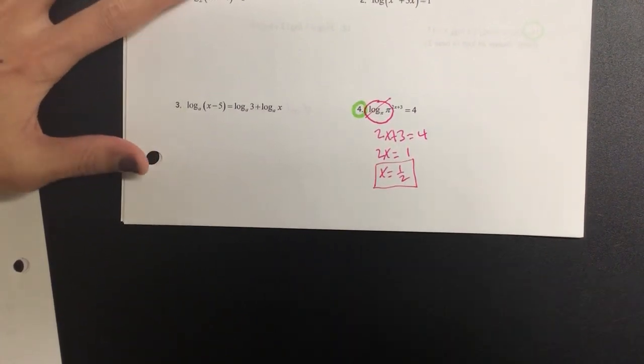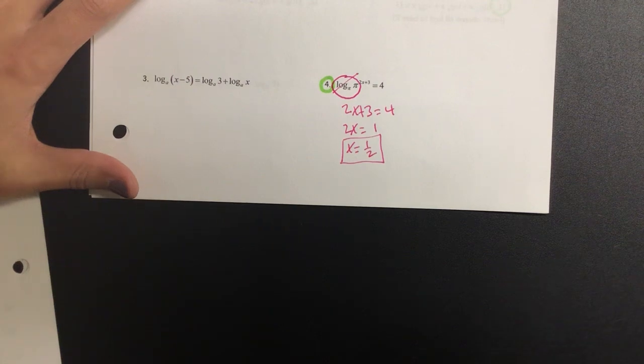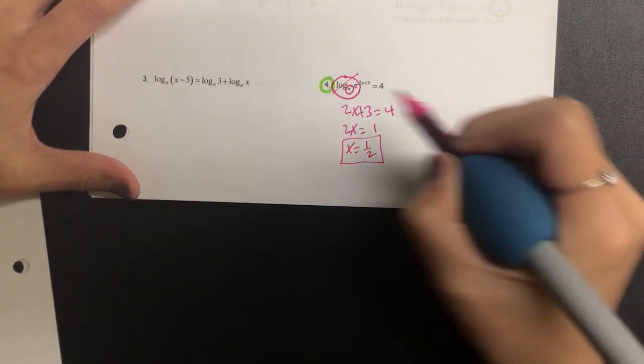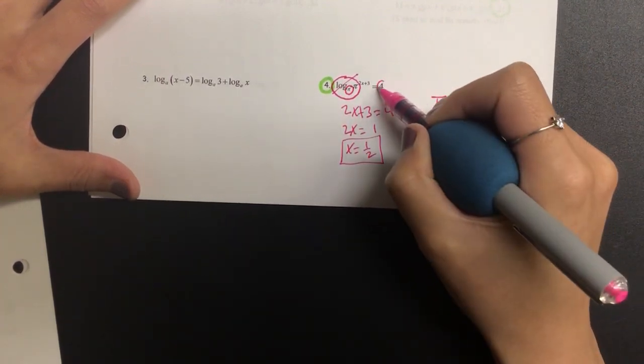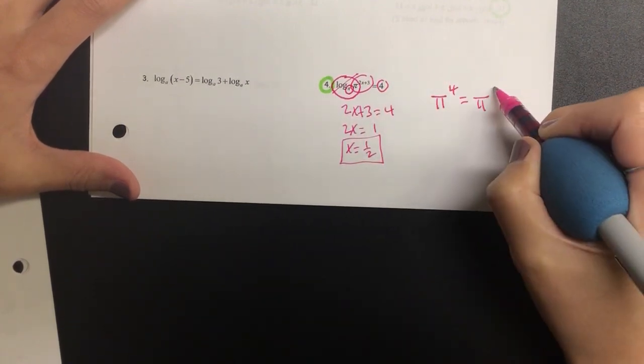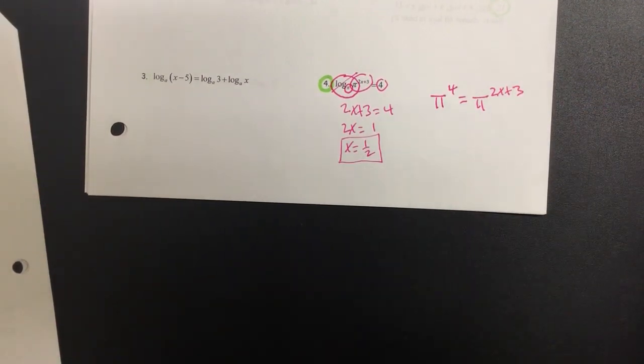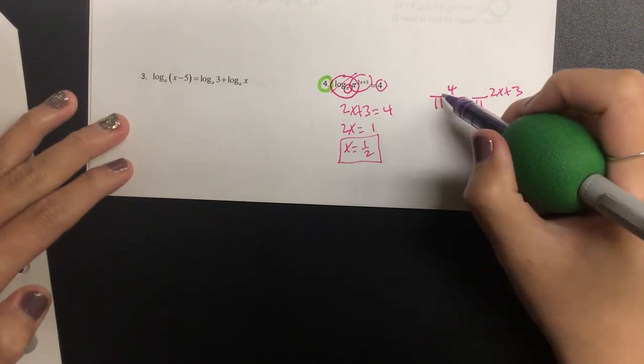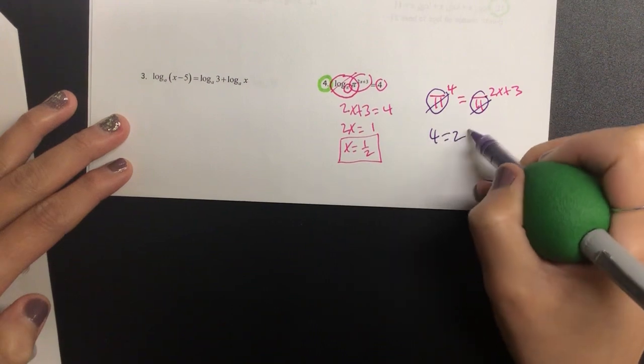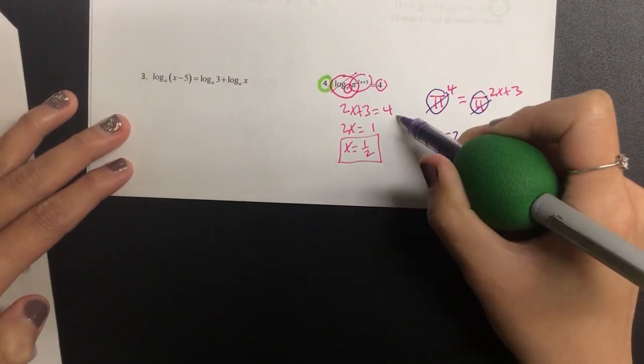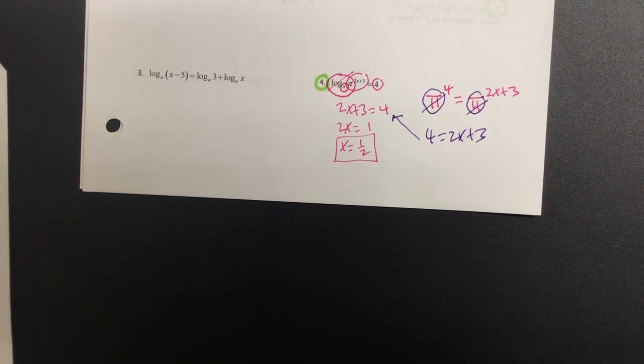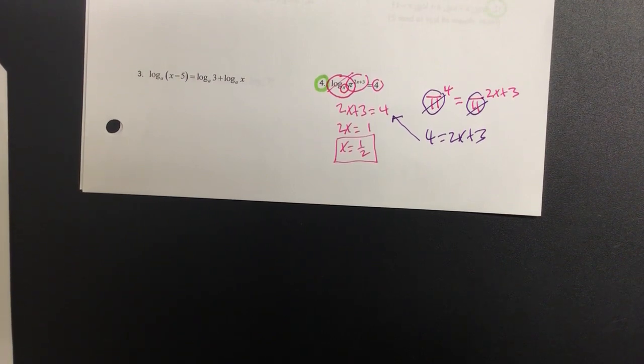Now if you don't remember this from algebra 2, hopefully you did something called around the world or drop and cross. Drop and cross basically means I'm going to drop this pi and make the 4 the new power, and then write out the remaining on the other side. What's unique about this problem is the base numbers are identical, so therefore exponents must be equal to each other. If you want to drop and cross on every single one of them go for it, but when I see a log with a small number and big number I'm just going to cancel it.